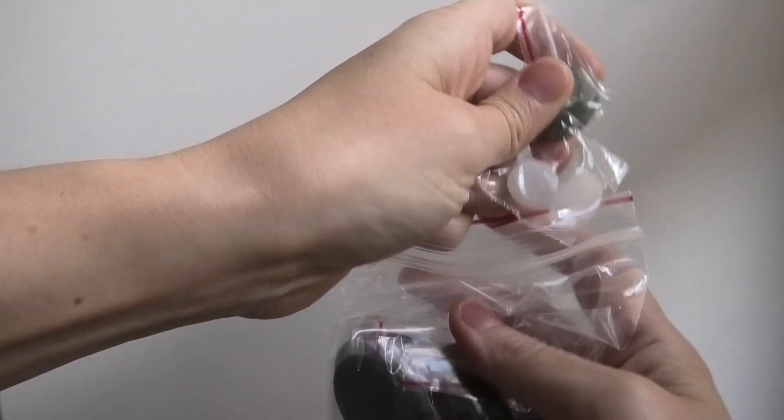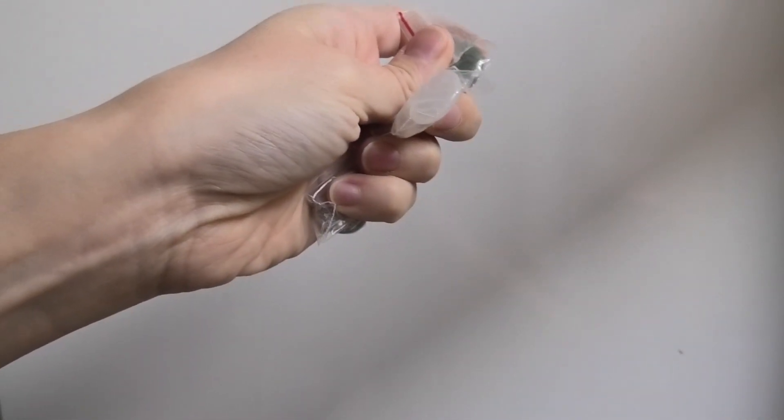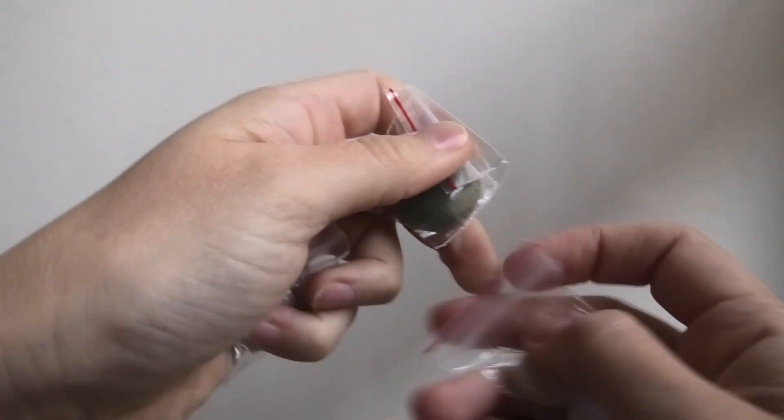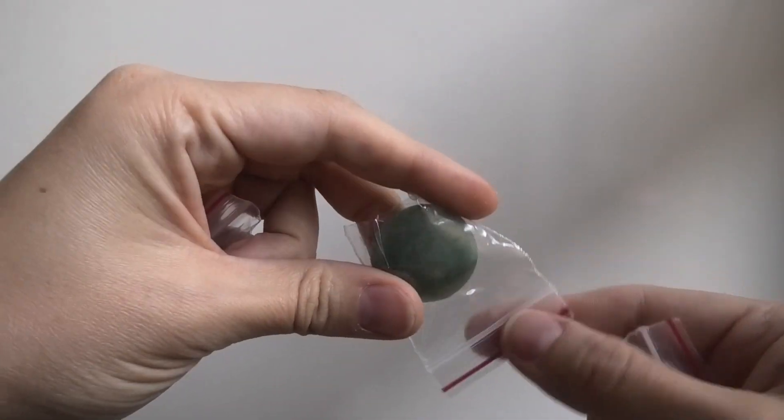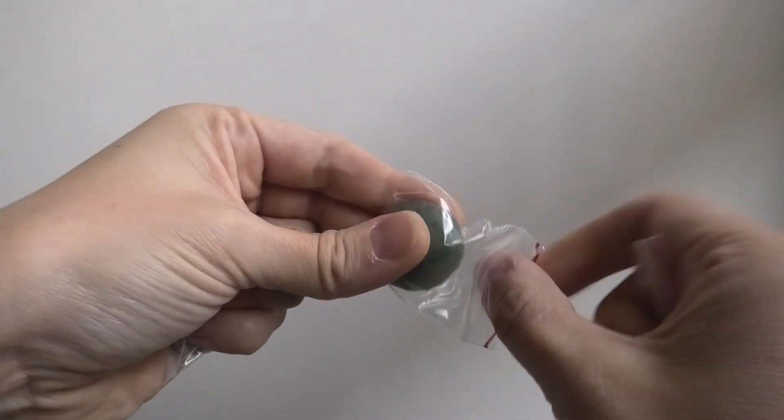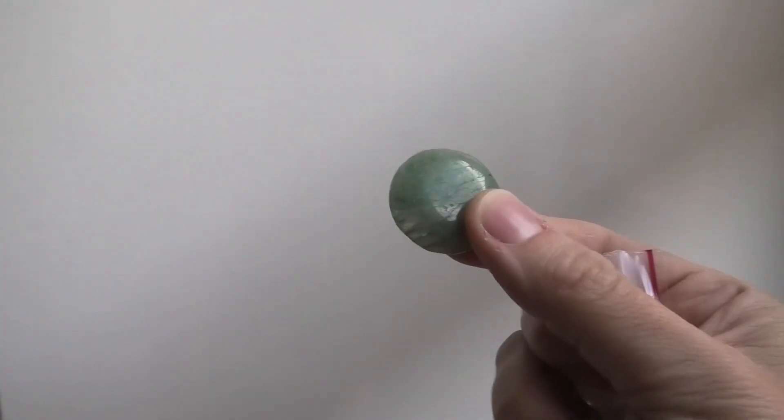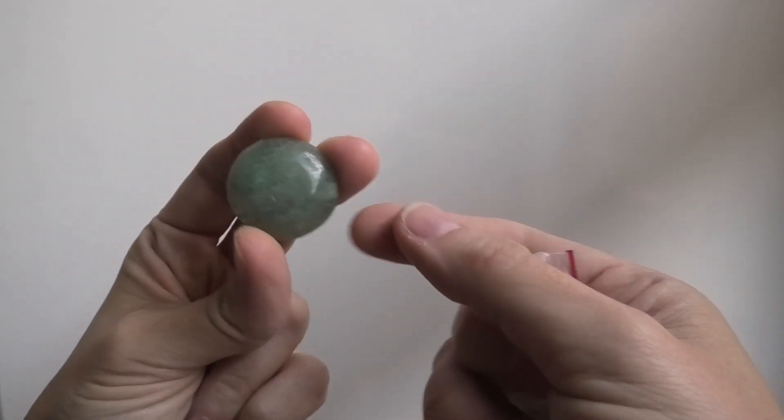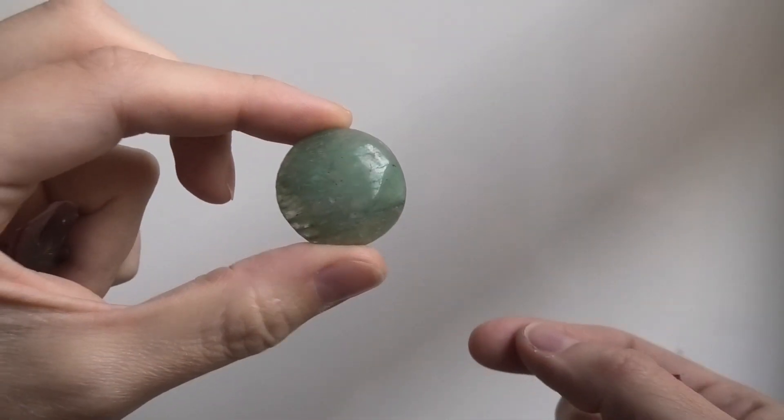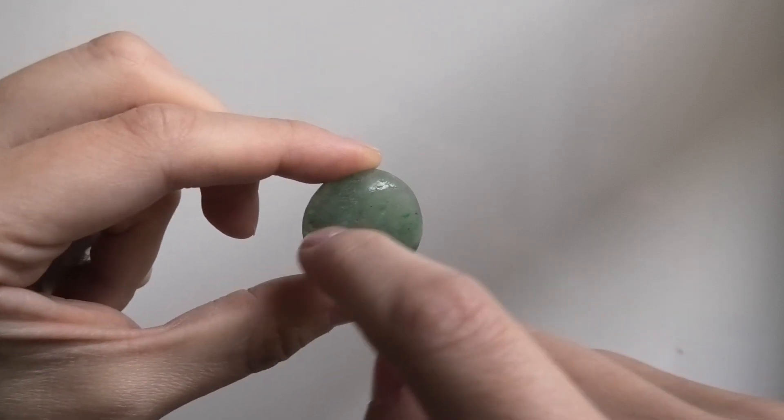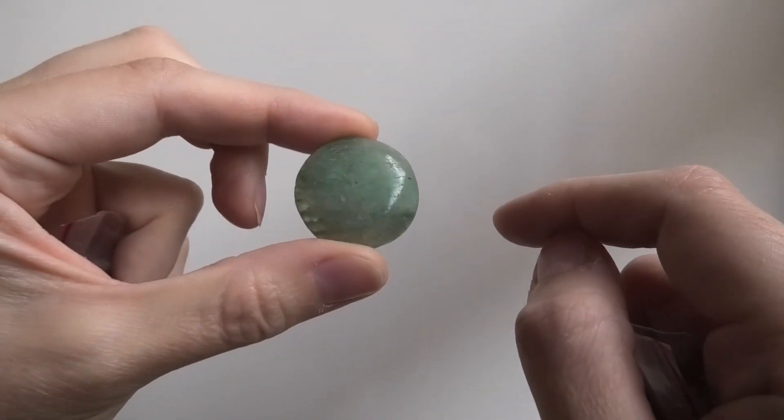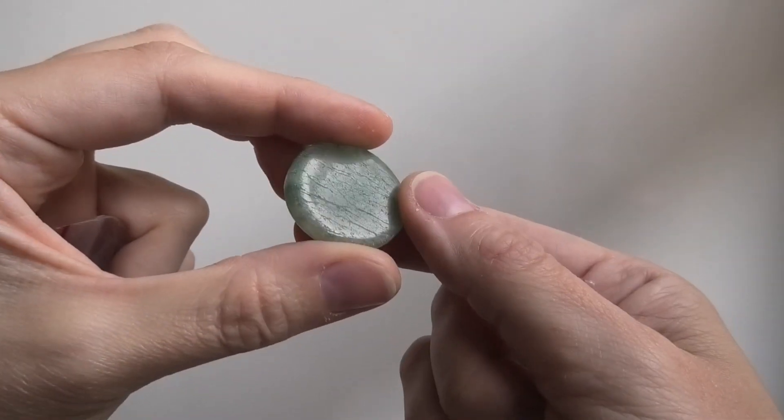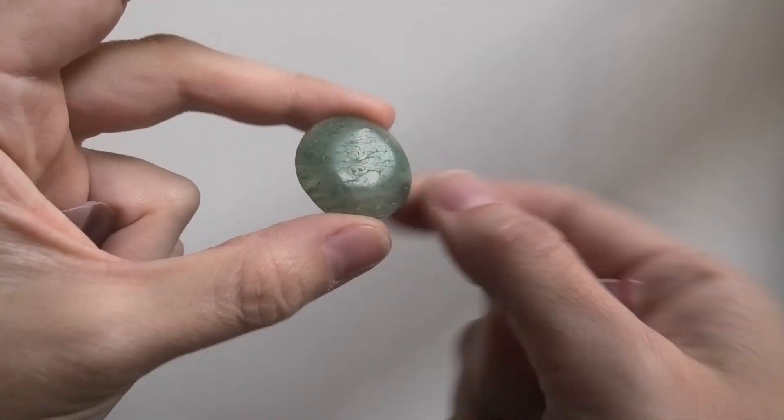So first we have this pretty green stone. This looks to me like moss agate, the way the veins of the green go through the stone. You can see them here on the surface. It's like a rougher surface type of stone.